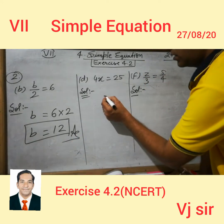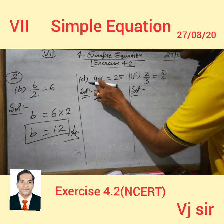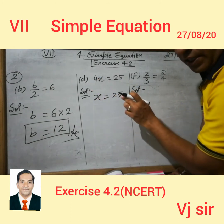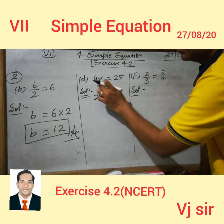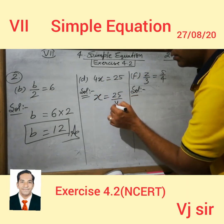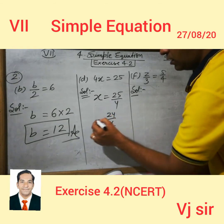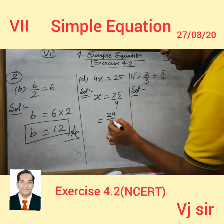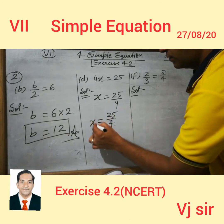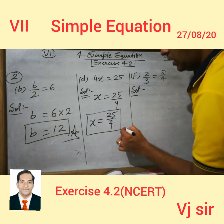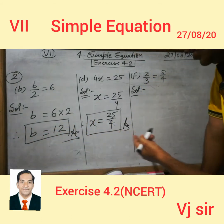25 is on its place and X is on its place. There is no sign between 4 and X, which means 4 is multiplied by X. So the value of X is equal to 25 upon 4. This is the answer. Please try to write the answer in a box.